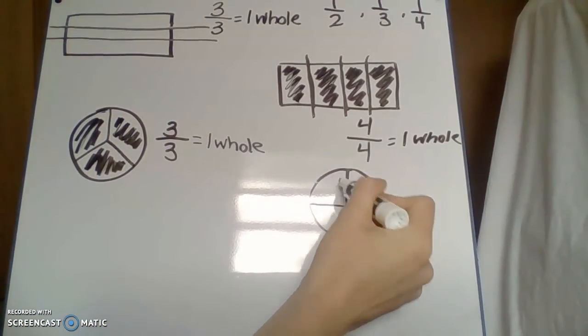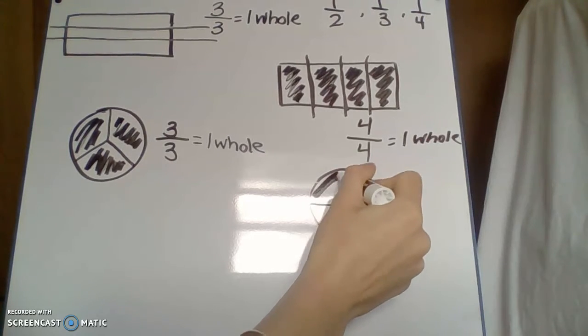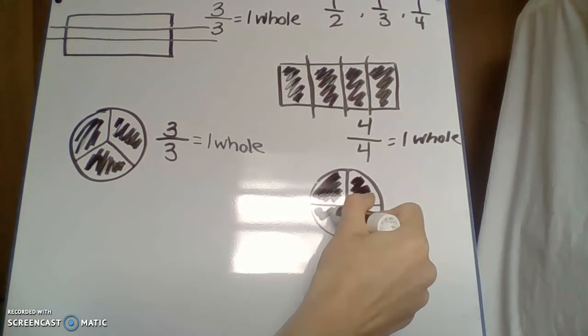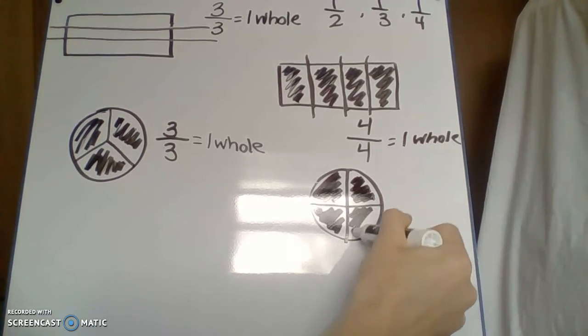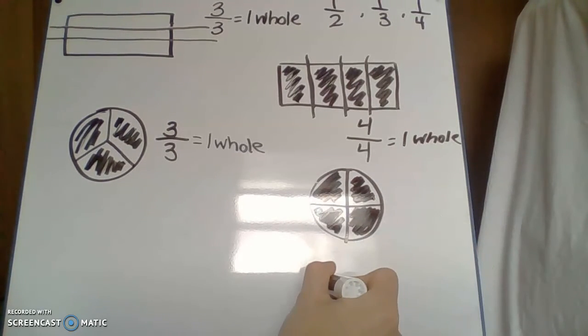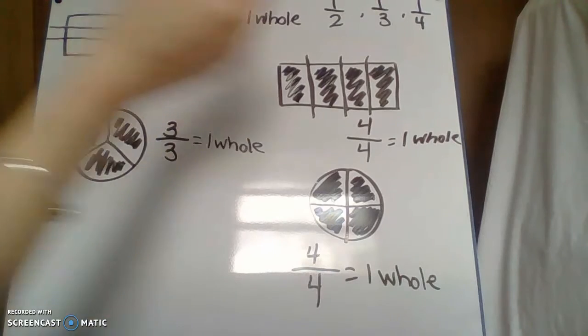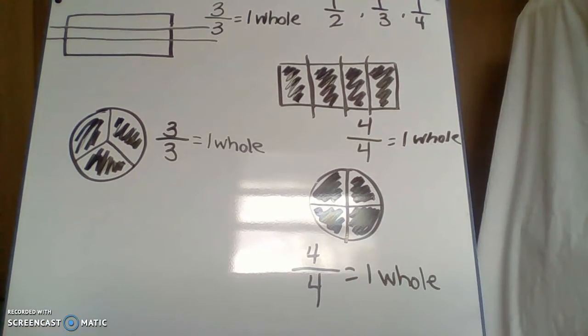So for your circle, it's going to be the same thing. We're just splitting it up into fourths. So I split it up into my four pieces. It's a little better. You could color these in. So one, two, three, four. So you know, you have a total of four, four pieces are colored in, four fourths is how we would say that.